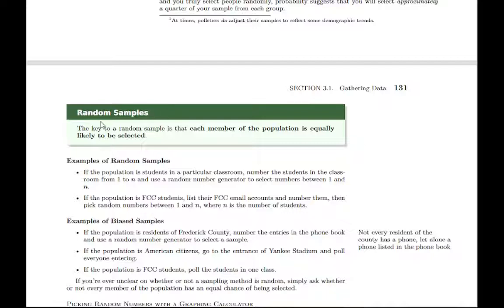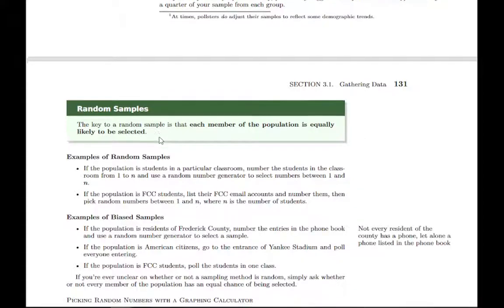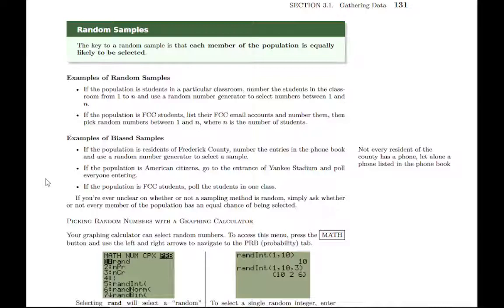There's a key here that with random samples, it's important that each member of the population is equally likely to be selected. If you're only selecting from a small section of your population, or you're not giving everyone an opportunity to be selected, it's more likely you'll have some sort of bias in your sample that will throw off results. There are examples here you can look through of random versus biased samples in ways that you may not get good results.